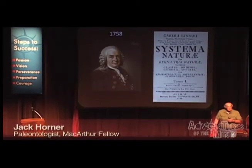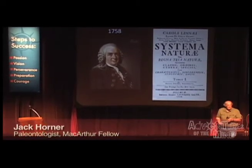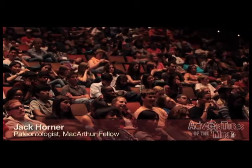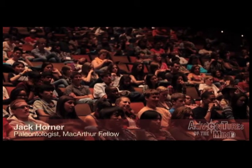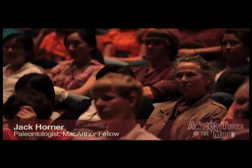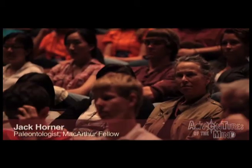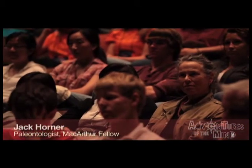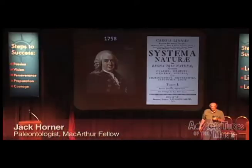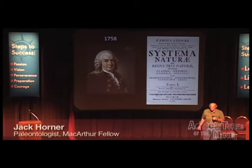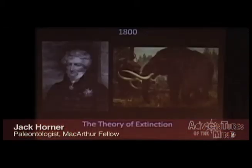In 1758, Carl Linnaeus came up with the classification system of animals and plants. Do you know how much we didn't know then? We didn't know about evolution. We didn't know about extinction. It was 1800 when the theory of extinction came about.